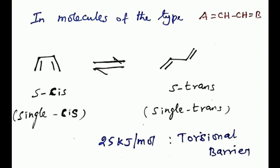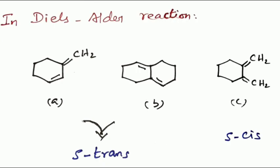The torsional barrier is nearly 25 kilojoules per mole, which is much higher than in ethane. In Diels-Alder reaction, the diene must be able to react in the s-cis conformation, and any structural features that interfere with the attainment of s-cis conformation inhibit the reaction. The dienes A and B are fixed in s-trans conformation and therefore are not capable of participation in Diels-Alder reactions, whereas diene C is fixed in the s-cis.